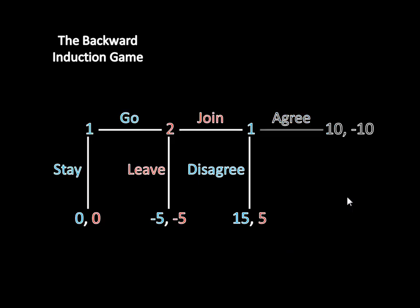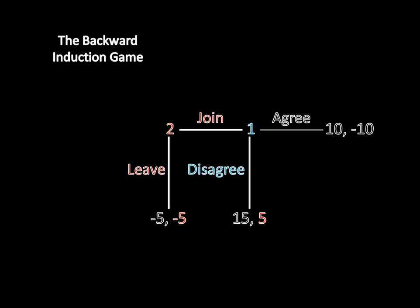So when we go back to this original game, instead of looking at this sub game where it was originally agree or disagree, we know what player one is going to do — he's going to disagree. So rather than having some uncertainty between this payoff 15-5 and this 10-10, the Nash equilibrium of this sub game is going to be 15-5. So we can just replace these two payoffs with just this one, and now we can condition player two's behavior based off of that. If we chop off this other part of the game and go to this sub game, we know that if player two were to join, then player one would disagree — it's in player one's best interest to do so. So if player two joins, she's not going to get negative 10; she knows that she's going to get five.